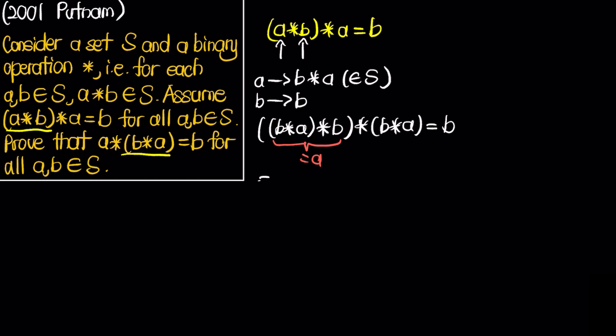So what this tells us is that A star (B star A) equals B, which is what we want to show.